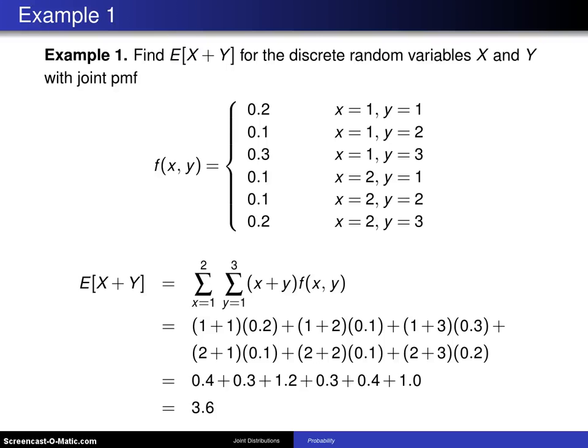Here's a first example of finding an expected value for a bivariate distribution. Find the expected value of x plus y for the discrete random variables x and y with joint probability mass function.